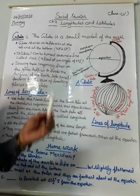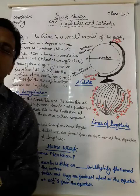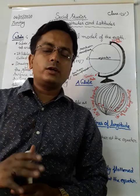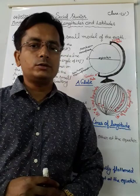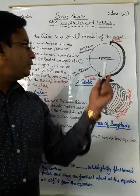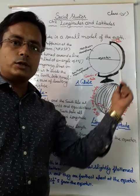Today we will start with the globe. What is a globe? A globe is a small model of the earth. Because the size of the earth is too big, we cannot study such a big shape and size directly, so for our convenience we make a model of the earth for study.